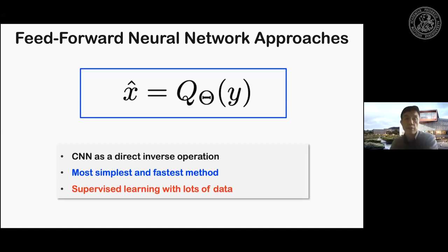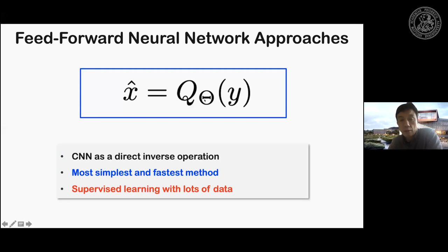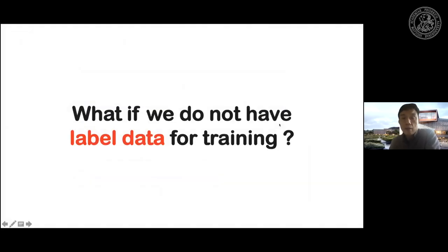Most current deep learning solutions for medical image reconstruction are based on feedforward neural network approaches. Here y is the low-dose CT image or undersampled MRI image, x is the ground-truth image, and θ is the neural network parameter. With supervised training using matched-pair data, by minimizing the loss function we can train the neural network. Once trained, for a given input you can instantly generate high-quality images. However, this is based on the assumption that we have access to paired labeled data — for example, low-dose data paired with high-dose data.